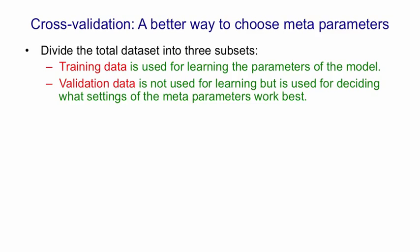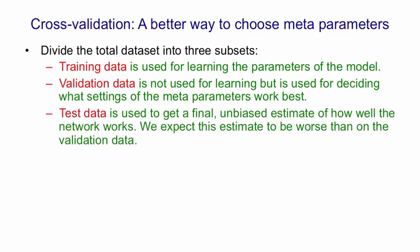But then once you've done that, and trained your model with what looks like the best number of hidden units and the best weight penalty, you're then going to see how well it does on the final set of data that you've held back, which is the test data. And you must only use that once. And that will give you an unbiased estimate of how well the network works. And in general, that estimate will be a little worse than on the validation data.